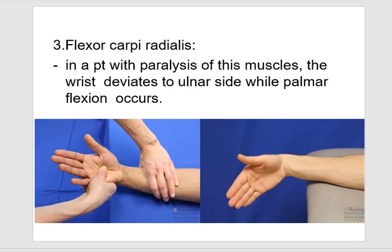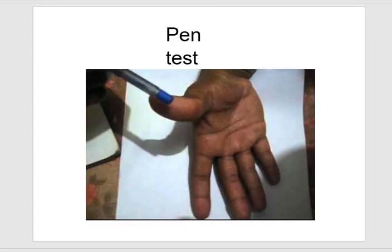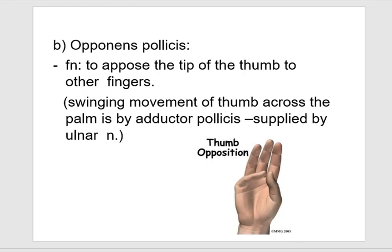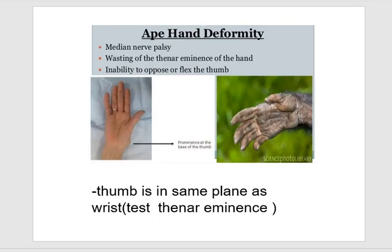Flexor carpi radialis: when paralyzed, the hand deviates to the radial side during palmar flexion. Abductor pollicis brevis functions in abduction of the thumb — the pen test: patient lays hand flat on table with palm facing the ceiling, a pen is held above the thumb, and the patient is asked to touch the pen with the tip of the thumb. Opponens pollicis opposes the thumb — tip of thumb to other fingers. In anterior interosseous nerve palsy, the patient is unable to make an OK sign — test FDP and FPL. Ape hand deformity in median nerve palsy: wasting of thenar muscles, inability to oppose or flex the thumb, thumb is in the same plane as the wrist.